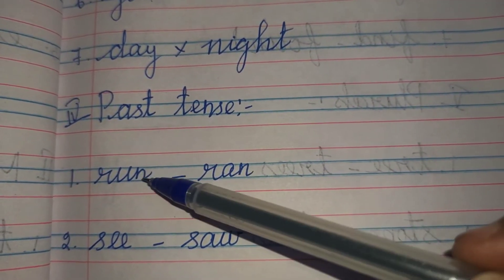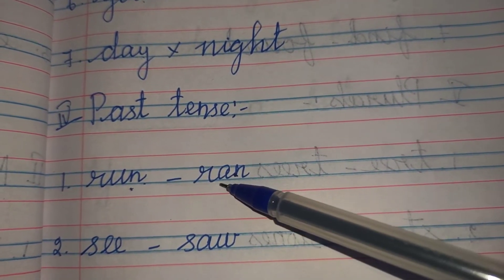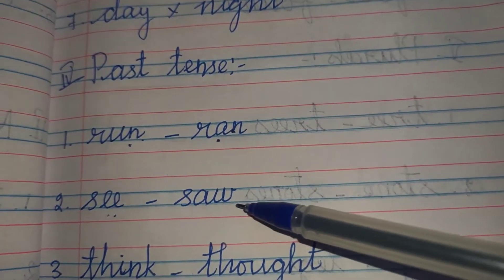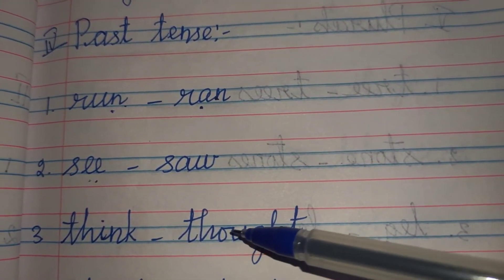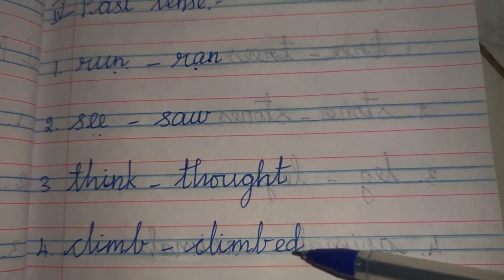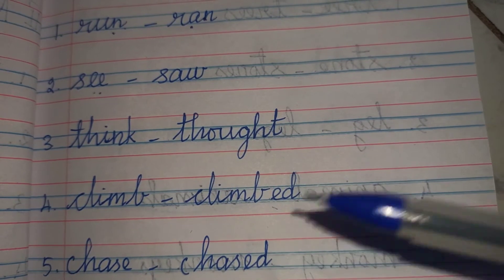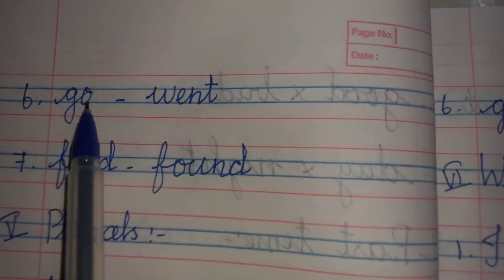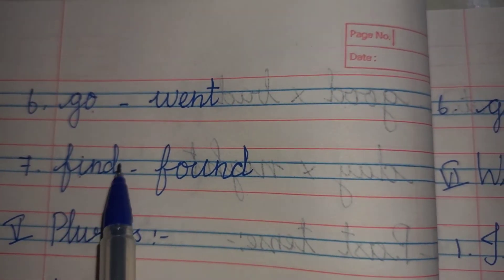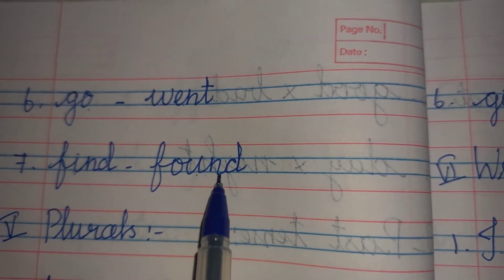Next Roman letter — Past tense. Ran. Instead of U, you should change to A. Saw, S-A-W, Saw. Think — Thought, T-H-O-U-G-H-T. Climb — Climbed, add E-D. Chase — Chased, E-D. Go — Went, W-E-N-T, Went. Find, F-I-N-D, Find. Past tense of find — Found, F-O-U-N-D, Found.